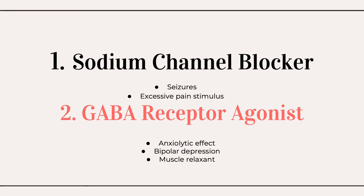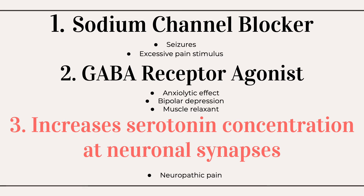The second major mechanism of action that carbamazepine exhibits is agonism of the GABA receptor. This allows entry of chloride into the cell and prevents the generation of an action potential. This mechanism is thought to be the reason why carbamazepine exhibits an anxiolytic effect and is useful in the treatment of bipolar depression and as a muscle relaxant. The third major mechanism is increasing the concentration of serotonin at neuronal synapses, which is thought to be useful in the treatment of neuropathic pain.